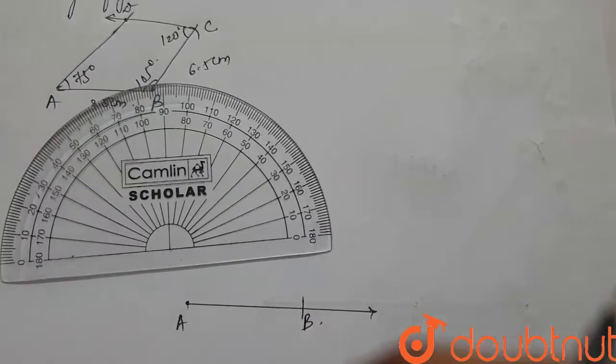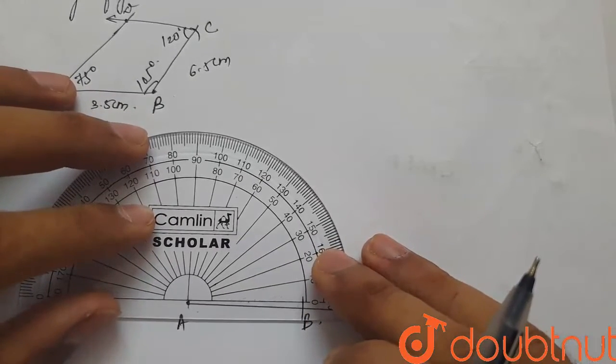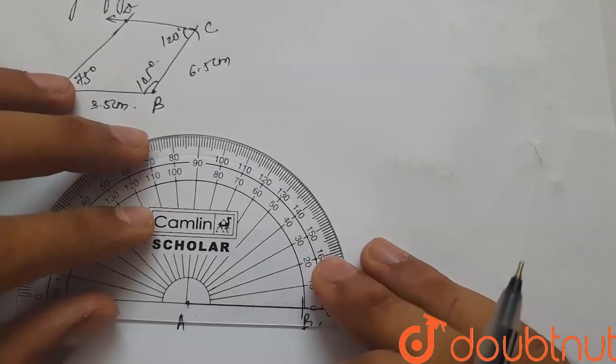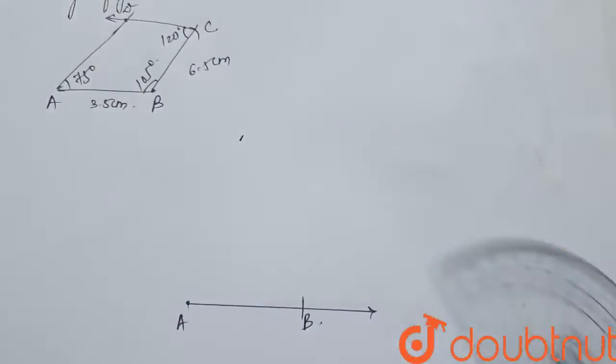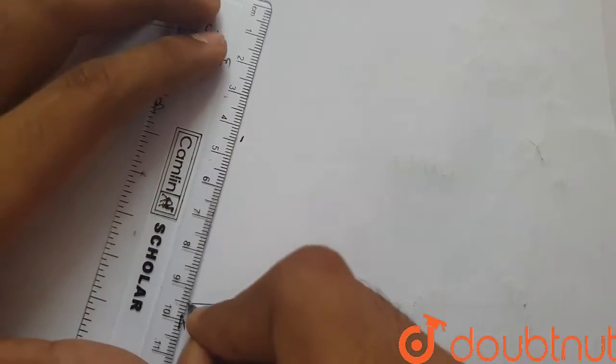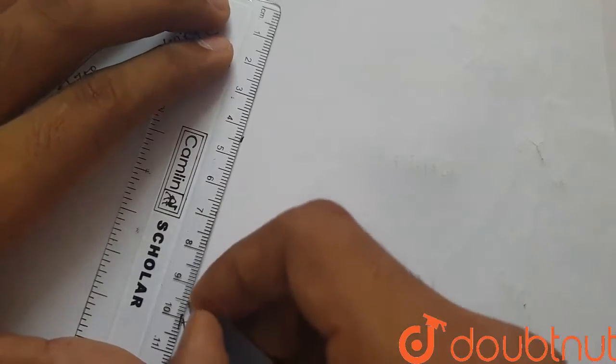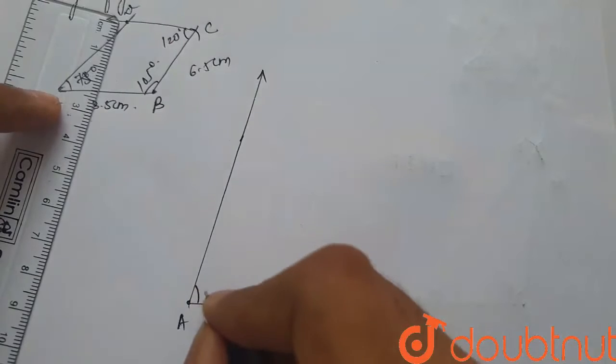Then, we'll use a protractor, place it properly on side AB and point A and mark 75 degrees like this. We'll join this 75 degrees with A to get a 75 degree angle.